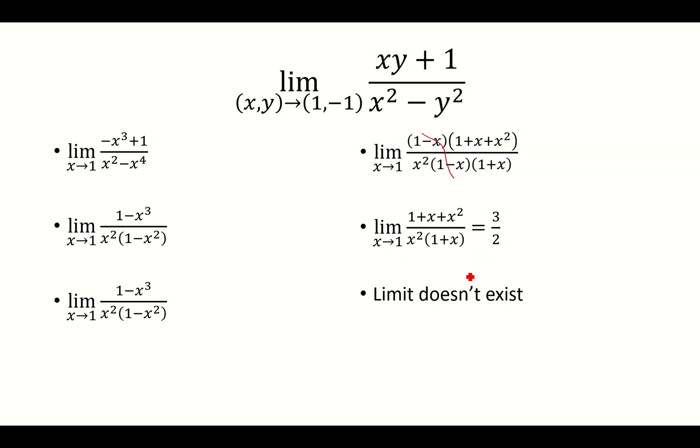The first path gave a limit of -1/2, and the second path gave a different limit of 3/2. Since the two paths yield different limits, we say that the limit doesn't exist.